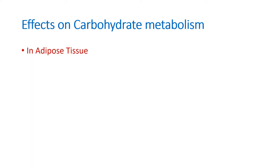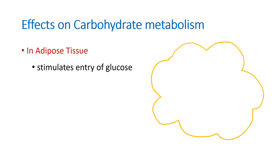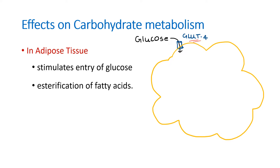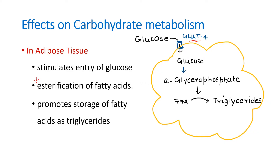In the adipose tissue, insulin stimulates the entry of glucose with the help of the GLUT4 transporter, leading to increased glucose entry. Inside the adipose tissue, insulin stimulates esterification of fatty acids. Glucose is converted to alpha glycerophosphate, which then stimulates the conversion of free fatty acids to triglycerides. So there is storage of glucose as well as storage in the form of triglycerides. The two important steps in the adipose tissue are esterification of fatty acids and storage as triglycerides.